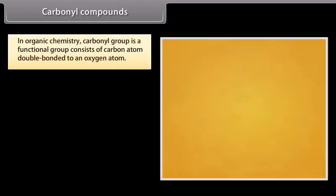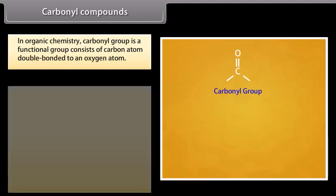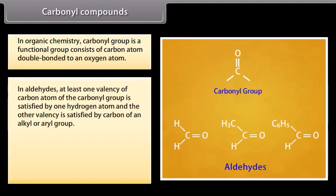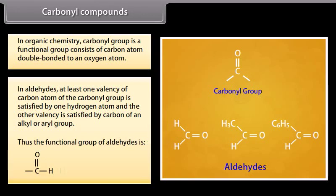Carbonyl compounds. In organic chemistry, the carbonyl group is a functional group consisting of a carbon atom double bonded to an oxygen atom. In aldehydes, at least one valency of the carbon atom of the carbonyl group is satisfied by a hydrogen atom, and the other valency is satisfied by carbon of an alkyl or aryl group. Thus, the functional group of aldehydes is CHO.